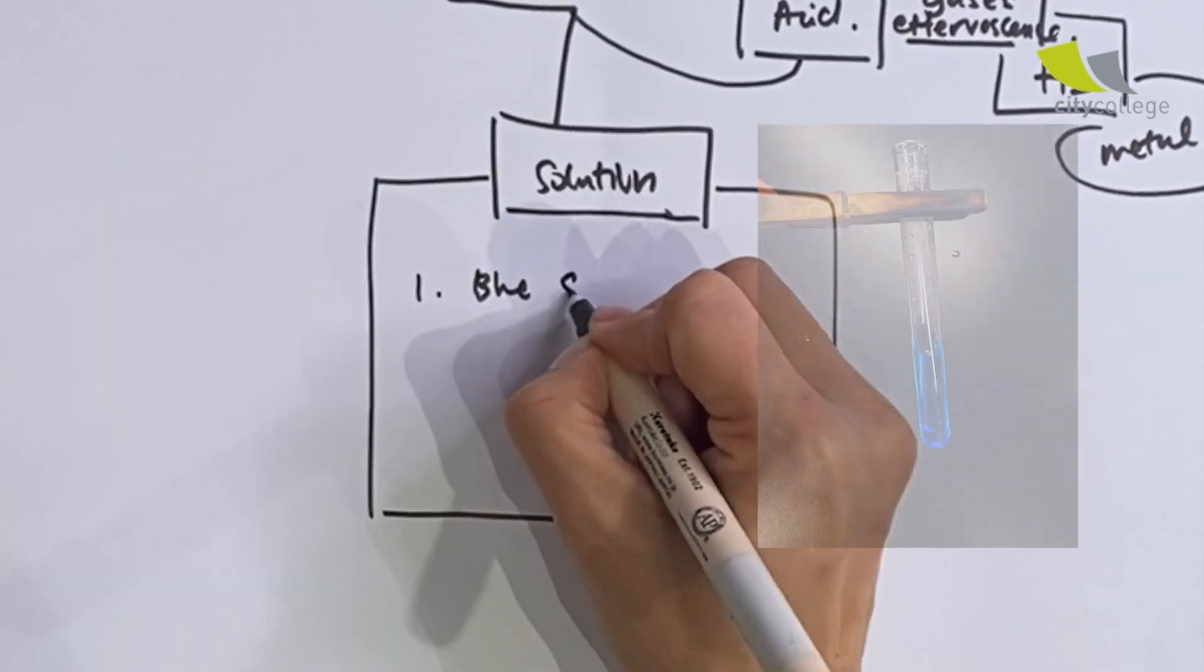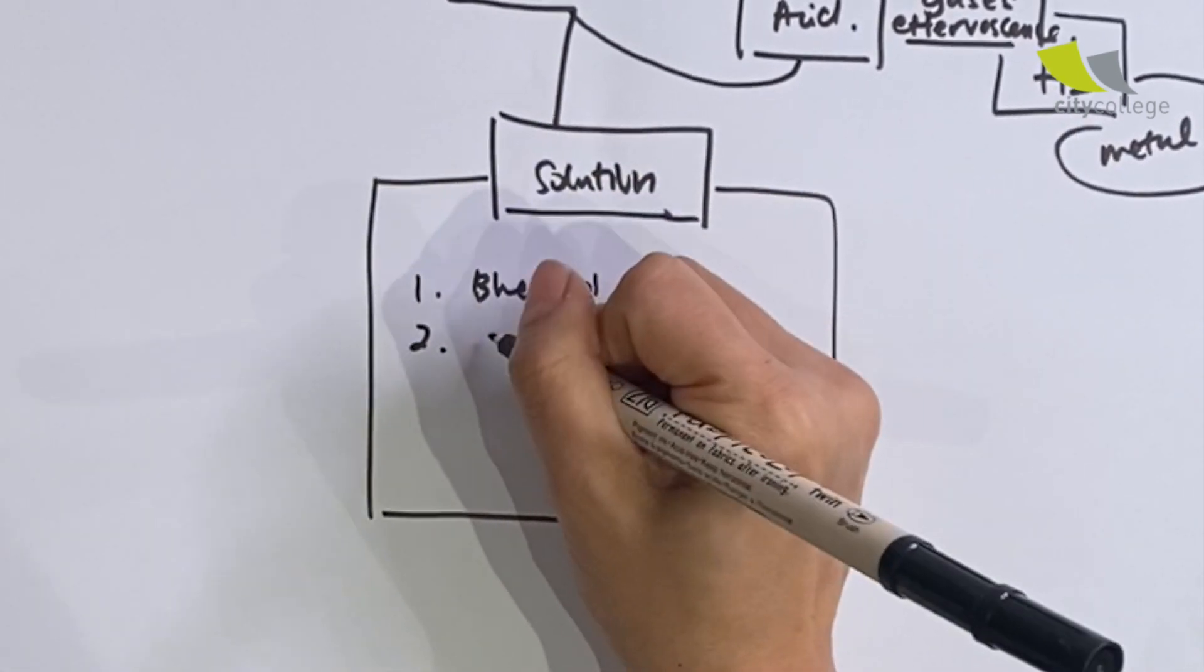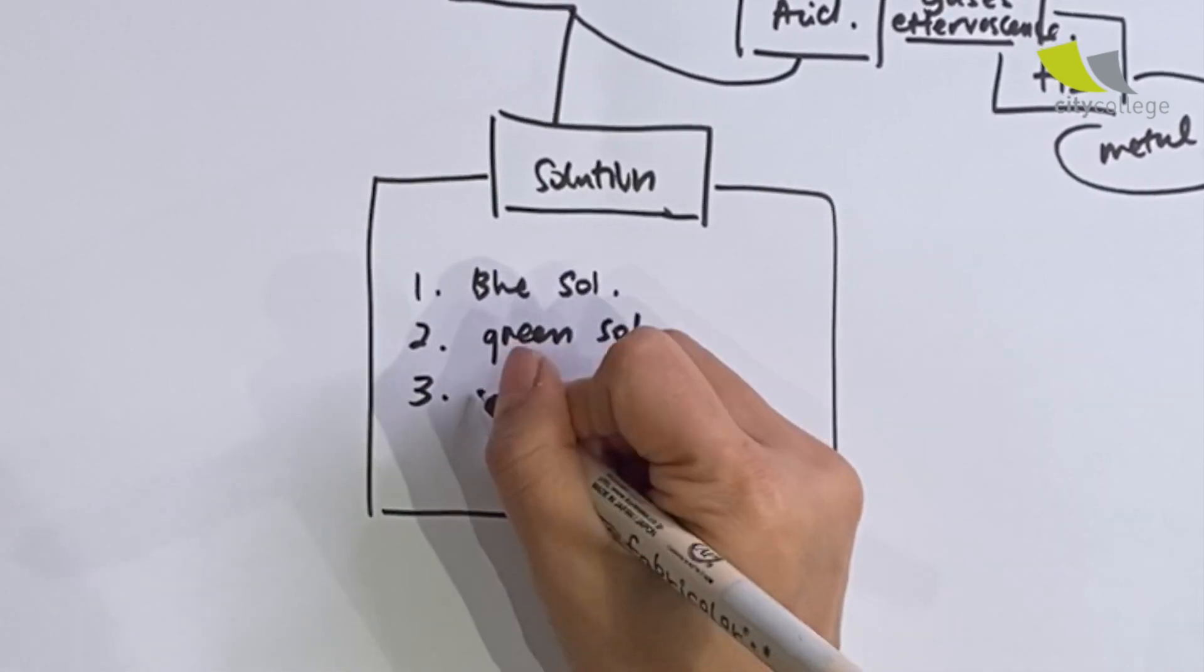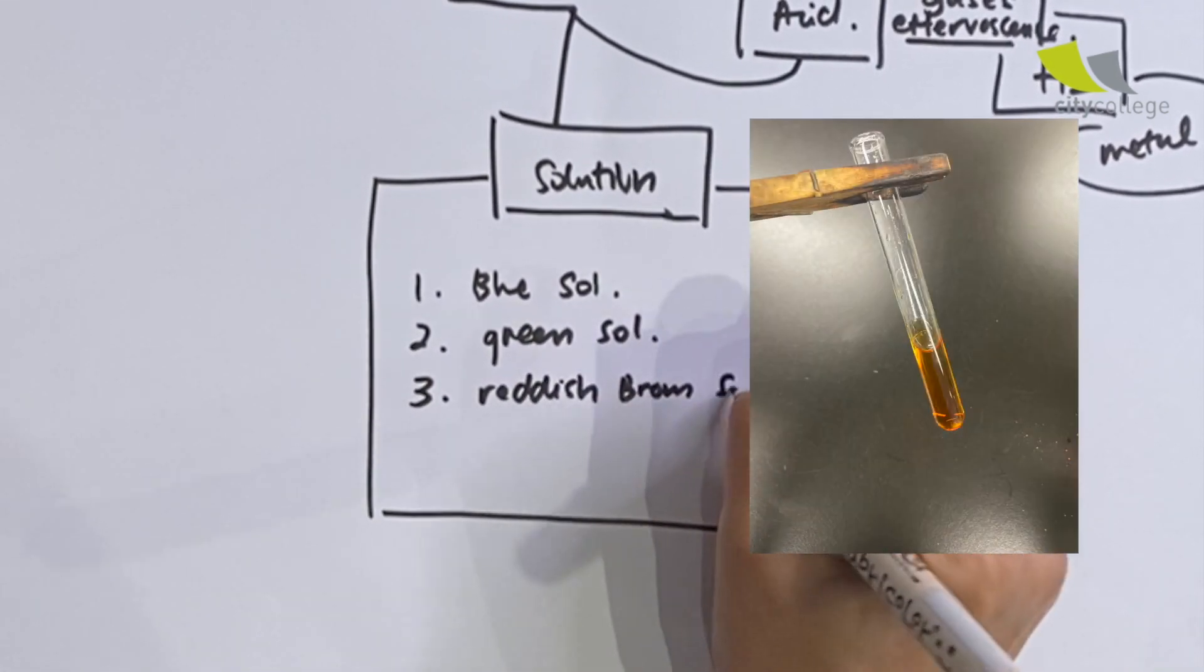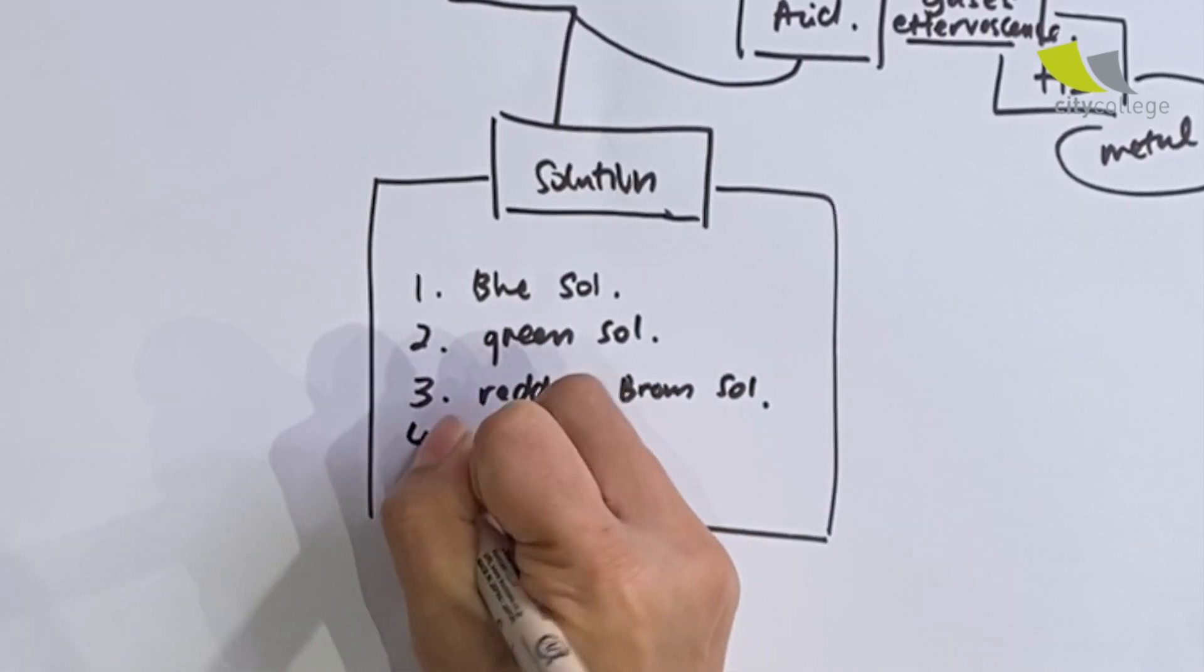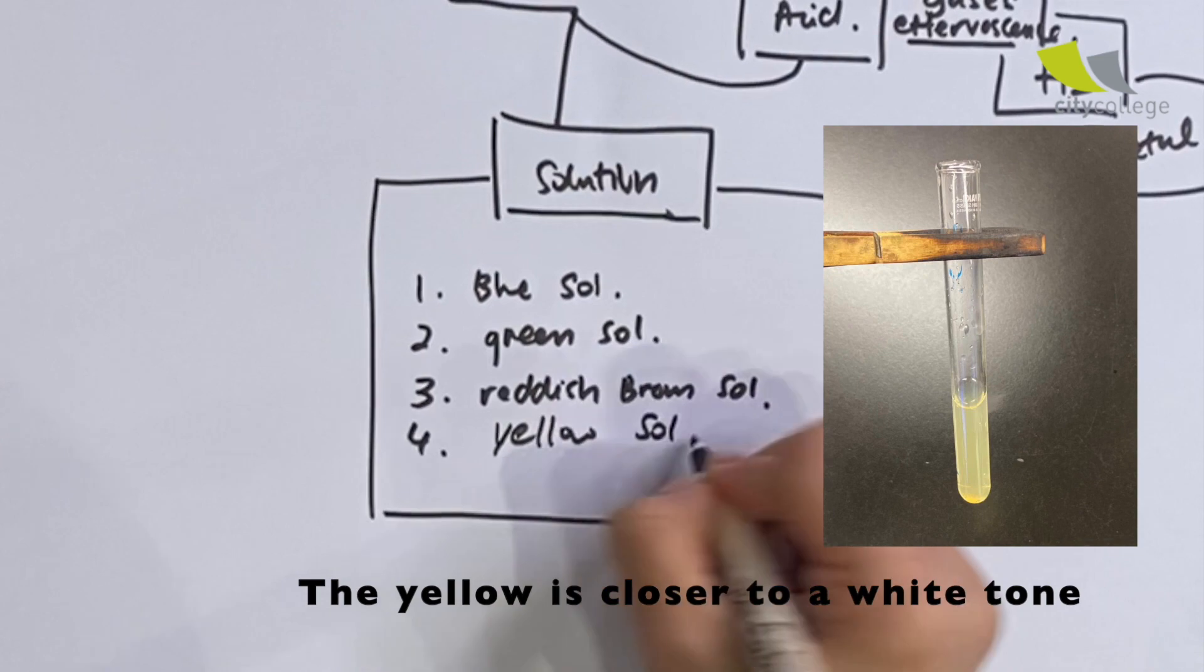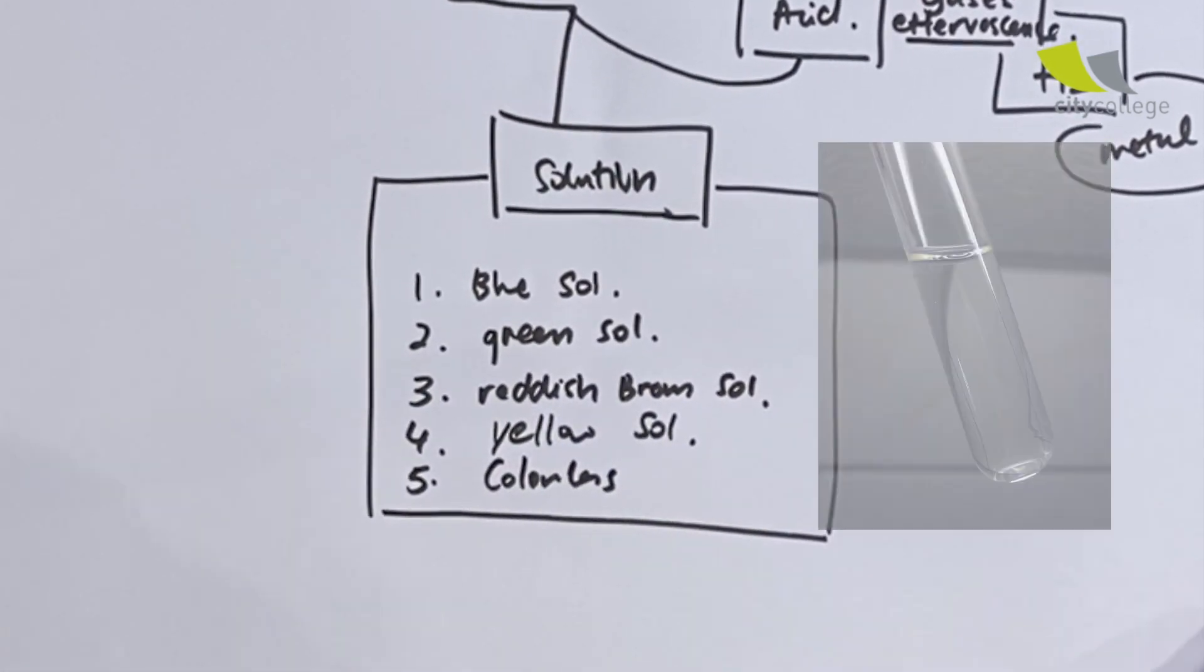The solution will have colors most of the time. Sometimes you might see it in blue color, so you call it blue solution. Sometimes you might see it in green, reddish-brown solution, or even a pale yellow solution. Lastly, everything might dissolve giving you a colorless solution.